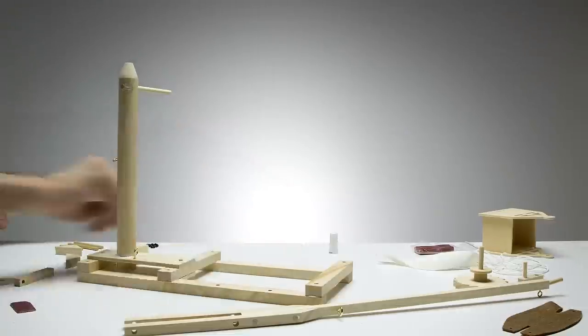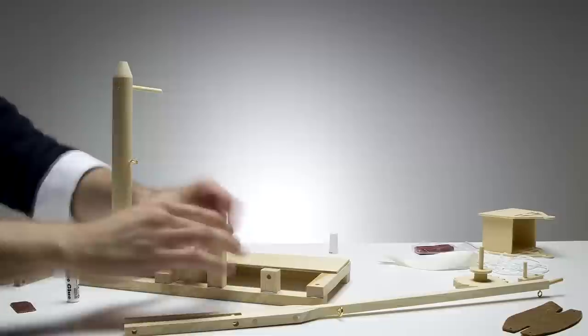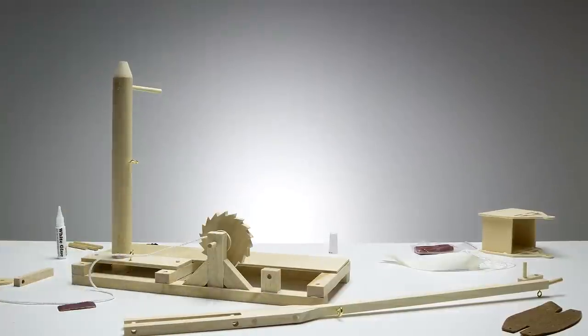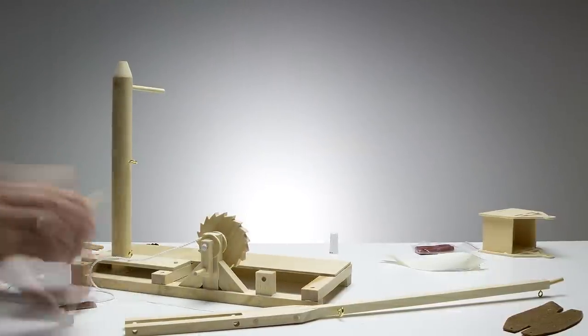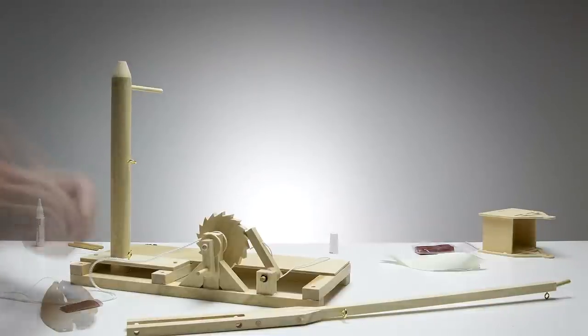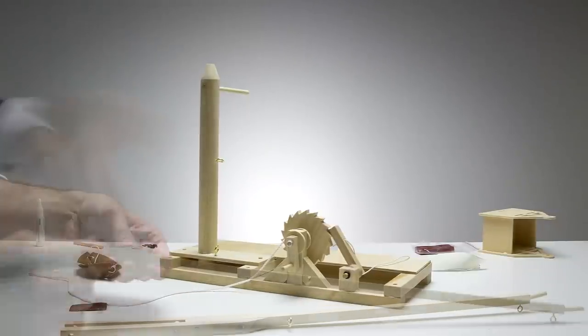Everything needed to make the trebuchet is included in the box: glue, string, sandpaper, a flag. The wood pieces are pre-cut, all natural and untreated from sustainable forest.